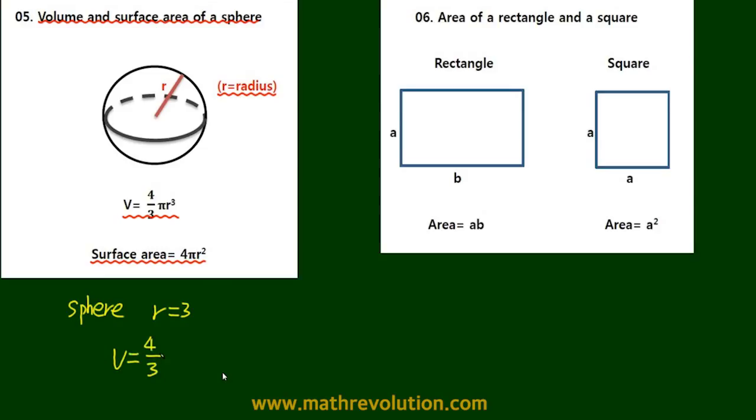So the volume is 4 over 3 times pi times r to the power of 3. So if we cross this out, we get 4 pi times 3 squared. So we get 36 pi. So this is the volume of the sphere.